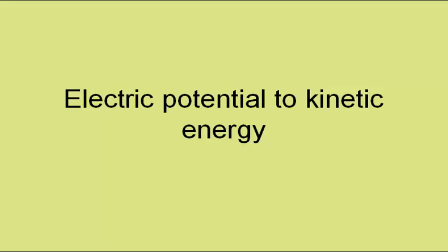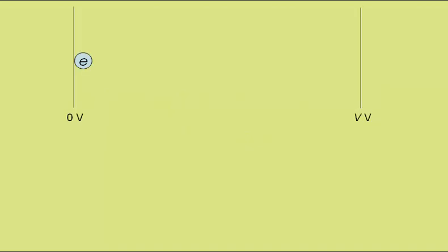Electric potential to kinetic energy. Here we have an electron on a metal plate at 0 volts relative to this nearby metal plate with a positive potential V volts.